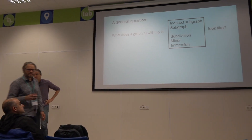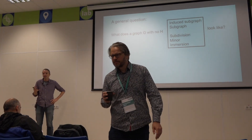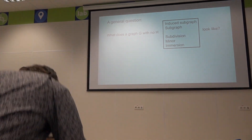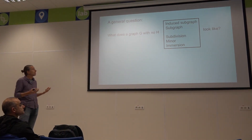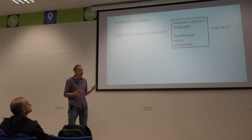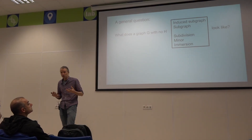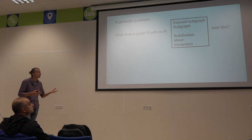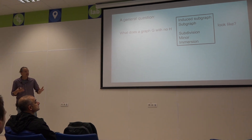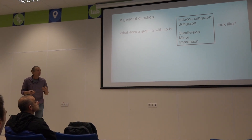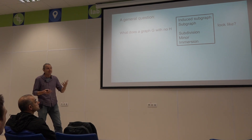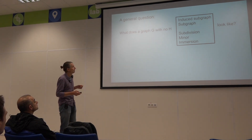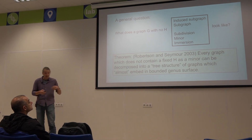I have a fixed graph H. For the rest of the talk, think of H as always being some fixed graph. We want to look at all graphs G which do not contain H under some model of graph containment. The standard ones are induced subgraph, or containing H as a subdivision, or as a minor. We want to know what that tells us about the graph G — what can I say about G if it excludes H.